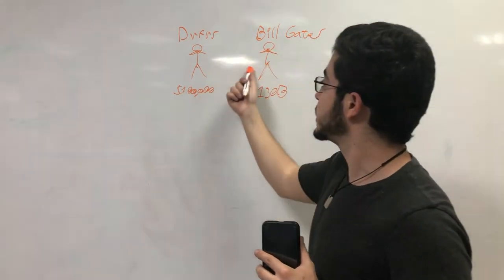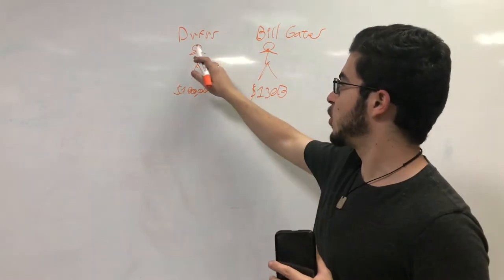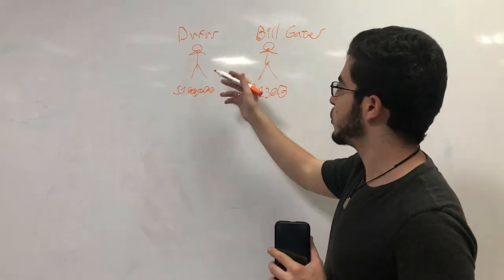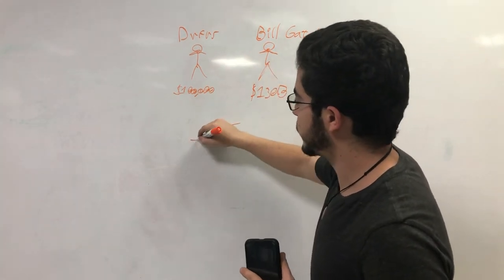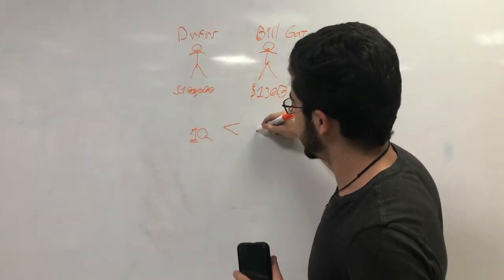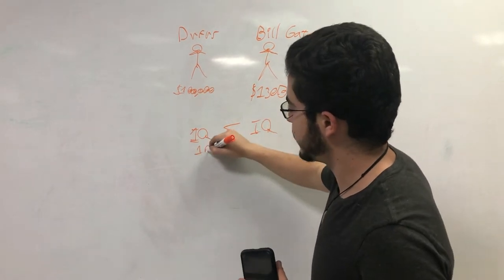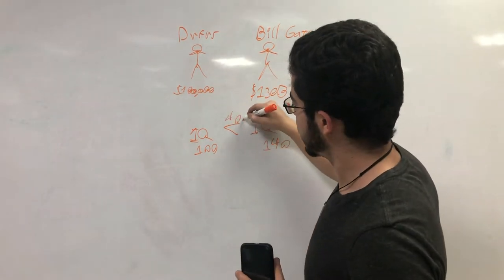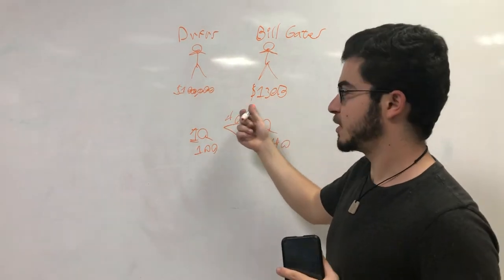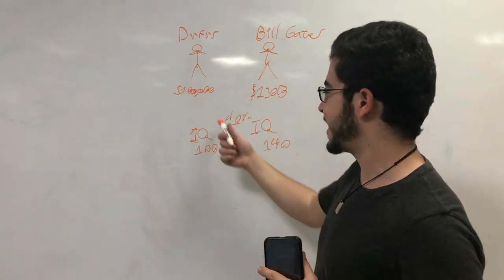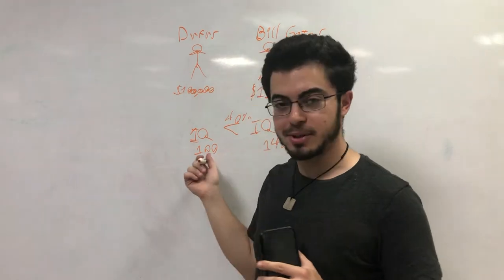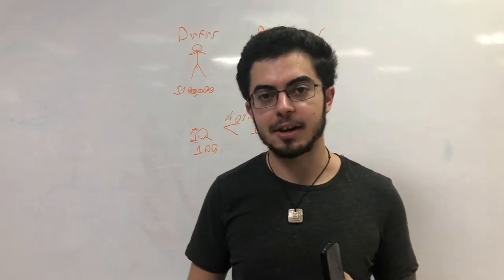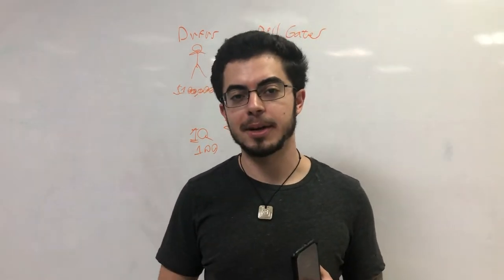So as you can see, they're both regular people. They both have arms, legs, heads. Everything is just the same. IQ, maybe somewhat of a difference. Maybe IQ is, let's say the average person, 100. Let's say Bill Gates, 140. This is 40% more. This is not a thousand times more. This is 40% more. So, obviously, the reason Bill Gates is worth $130 billion might be in part because he's very smart, but it's not the main reason.